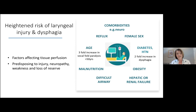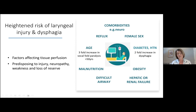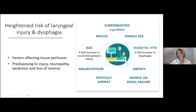Additional risk factors that heighten laryngeal injury and dysphagia include diabetes, which doubles dysphagia risk; age — from 50 onwards, the risk of vocal cord paralysis increases threefold; malnutrition; obesity; difficult airway; and hepatic and renal failure. These conditions affect tissue perfusion, predispose to injury, and contribute to neuropathy, weakness, and loss of physiological reserve in voice and swallowing.